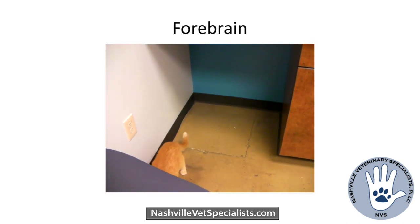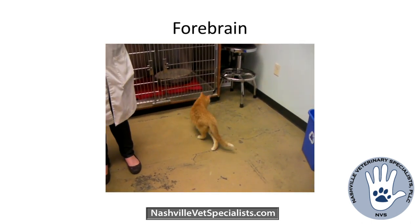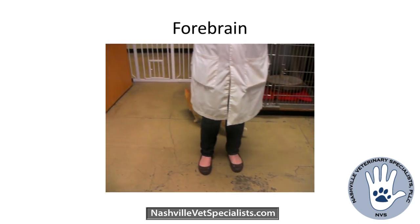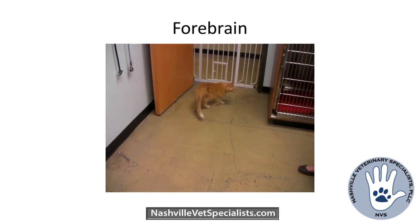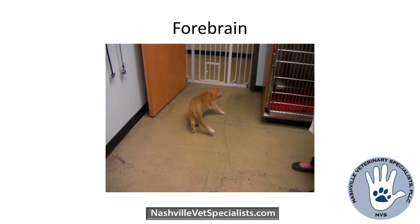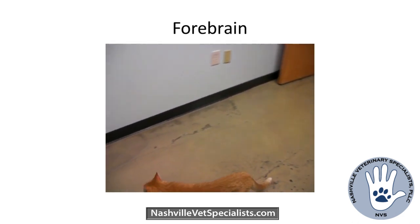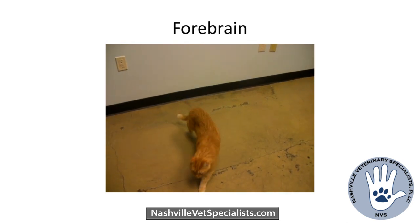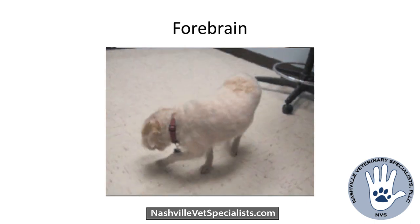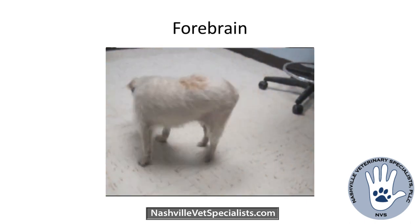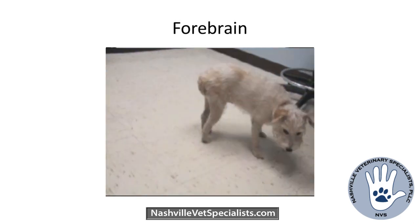This is a cat with a right-sided forebrain lesion. You can see this cat is pacing and occasionally circles to the right side — they usually circle towards the side of the lesion — but this animal is not significantly ataxic. On neuro exam we'd expect proprioceptive deficits on the left side, contralateral to the lesion, and potentially a visual deficit on the opposite side, but no other cranial nerves affected. Here's a dog with a right forebrain lesion — obviously circling, not significantly ataxic, no head tilt.